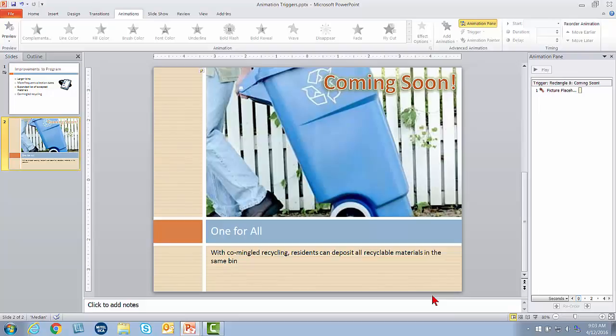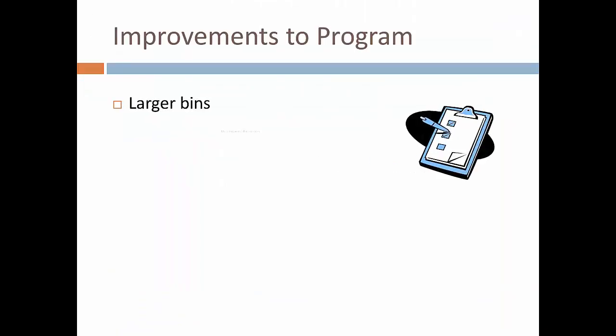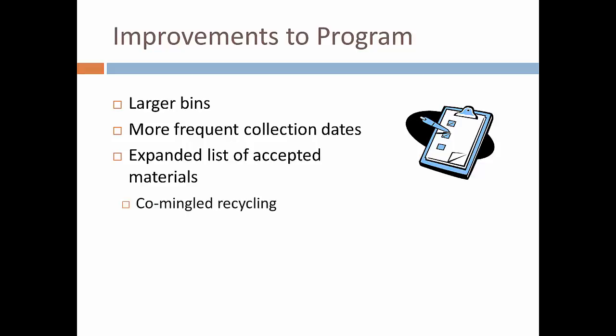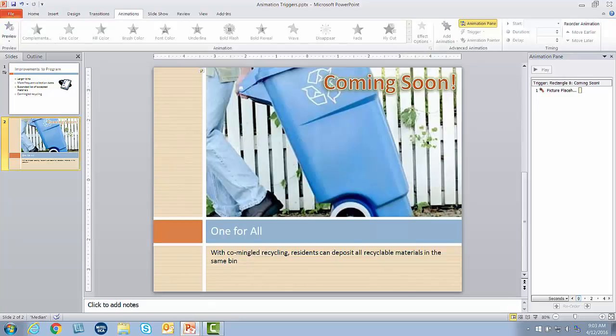Let me hit Escape. Now let me show you what it's like if I decide not to trigger the animation. Click, click, click, click — there's my bullets. Click, here's the next slide. Now let's say I decide I don't want to show the table to this particular audience, or we don't have time for it. So without clicking on Coming Soon, I just click to move on to the next slide. See, it never happened. That's the idea of the animation trigger — you have control over it each time you give the presentation.